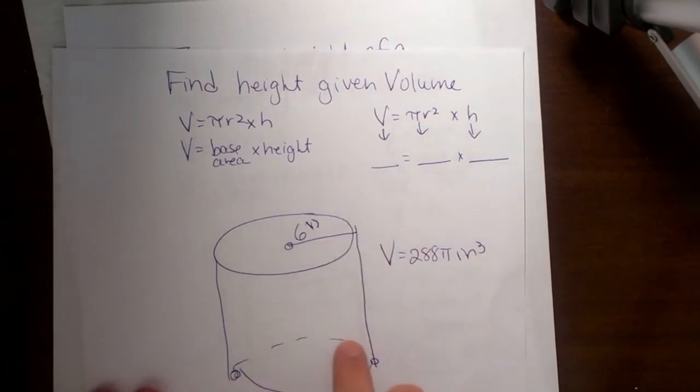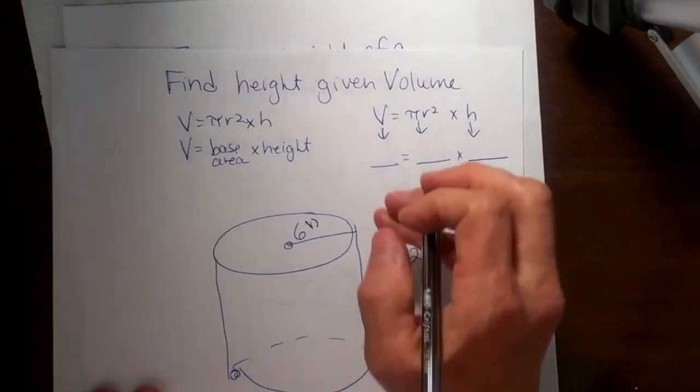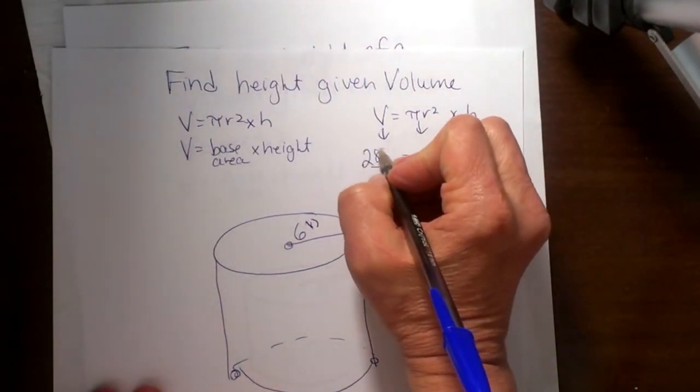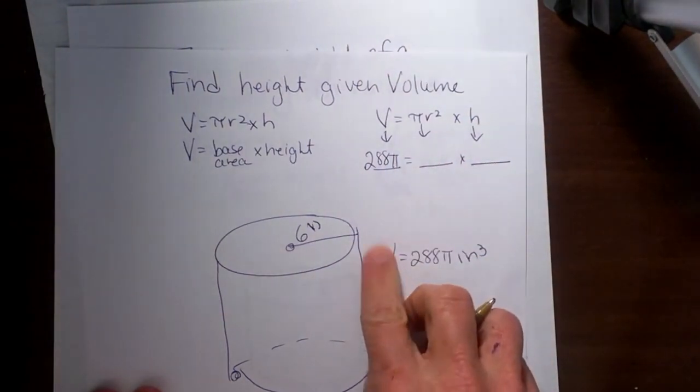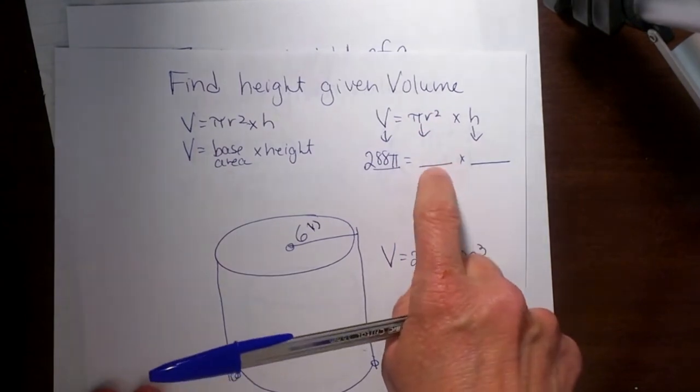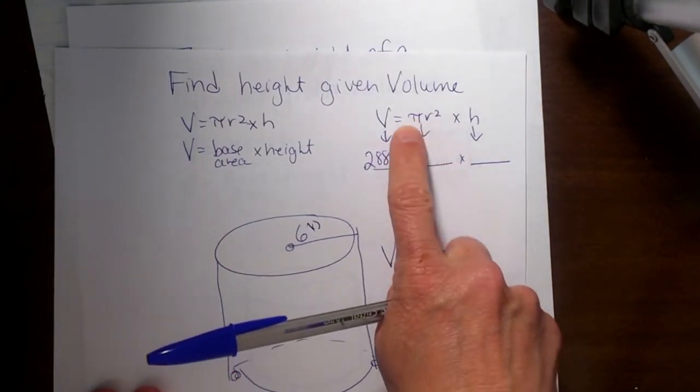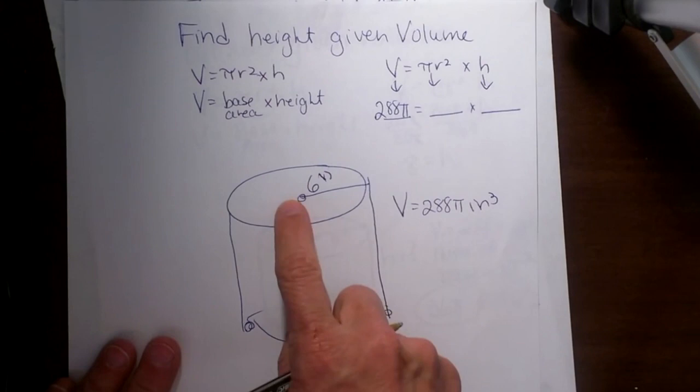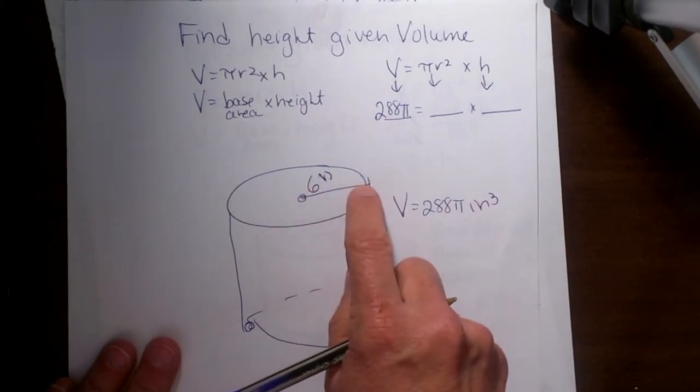Let's start plugging in what we know. We're given that the volume is 288π. I'm taking that volume and plugging it in here. Now I need to plug in the area of the base, which is πr². Let's look at our cylinder. The cylinder has a radius of 6.